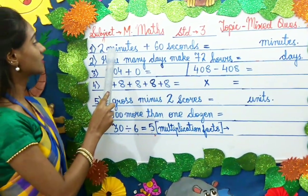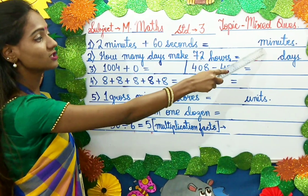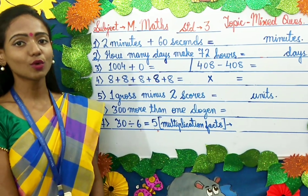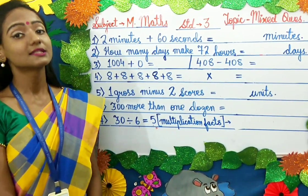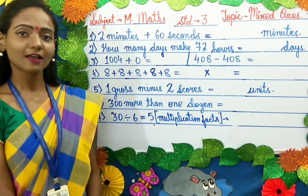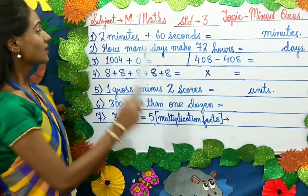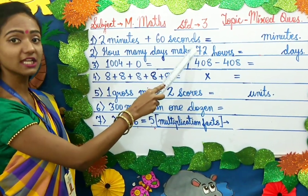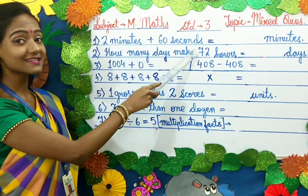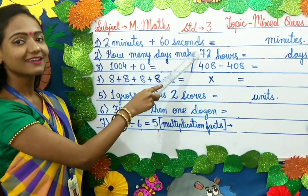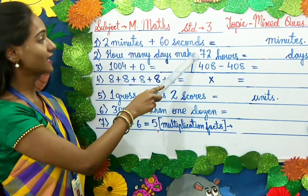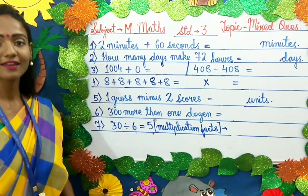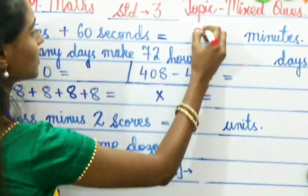The first question children: 2 minutes plus 60 seconds equals how many minutes? Here we are talking about time. As you know, we calculate time using seconds, minutes and hours. First we have to change seconds into minutes. 60 seconds equals 1 minute. So let us add 2 minutes plus 1 minute — the answer is 3 minutes.